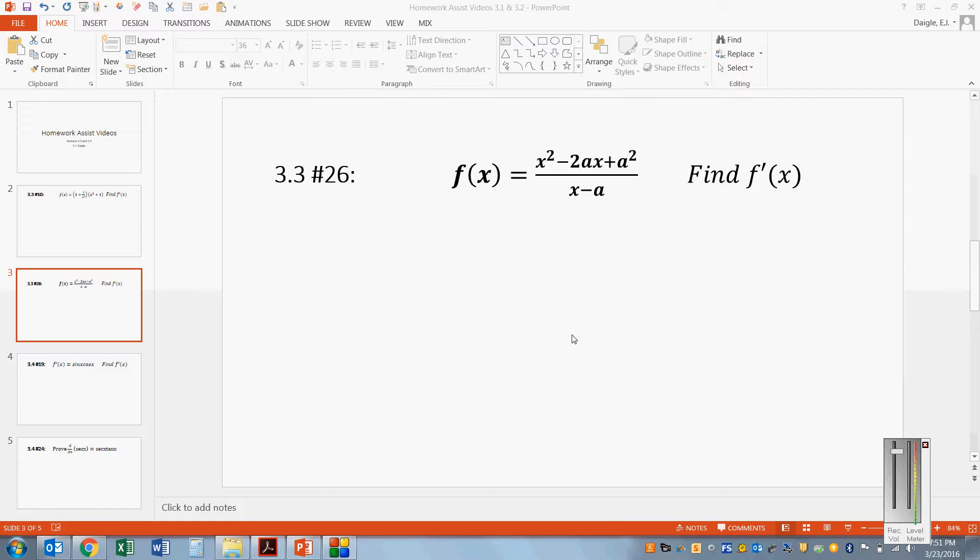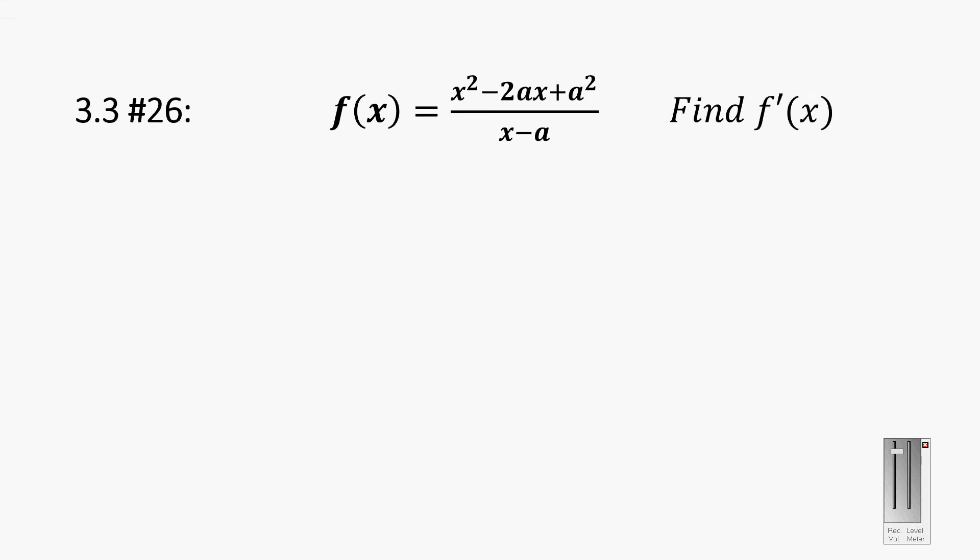Alright, for the next problem here, we have 3.3 number 26. And let's see here, alright. So f of x equals x squared minus 2ax plus a squared over x minus a.